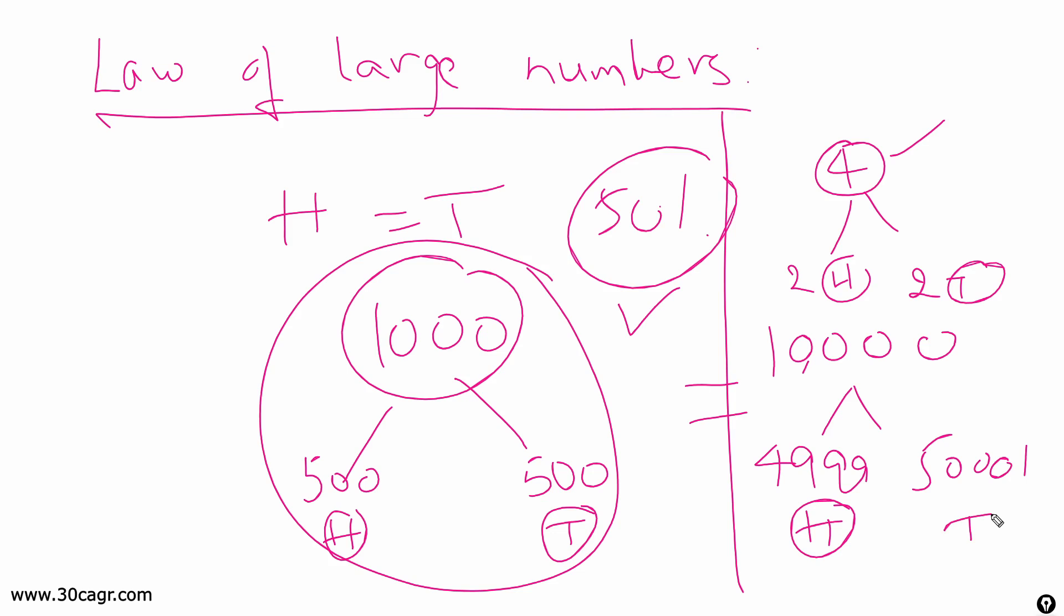There are so many simulations available on Google. You can go and just type law of large numbers simulation. You can easily find them. So what this says is if you do it for large number of times, let's say you have done this for thousand times or ten thousand times, you observe that slowly this practical accuracy becomes equals to this theoretical accuracy.